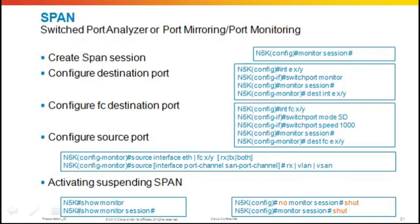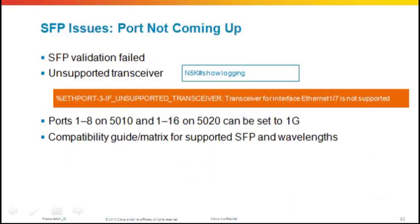Let's talk about a few troubleshooting issues that frequently come to the TAC. First, SFP issues and ports not coming up. A common log message is 'SFP validation failed'. Use 'show logging' to view the logs and look for the validation message — it may indicate an unsupported transceiver. Use the Cisco compatibility guide and matrix for supported SFPs to verify what your 5K supports.